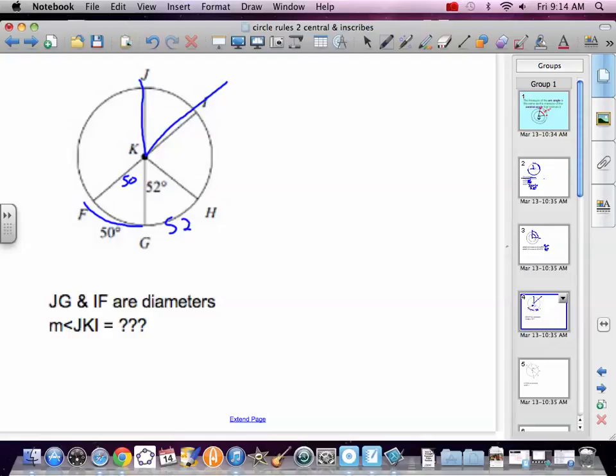And we know that all the way from F around to I is 180. And we've got 50 and 50, we have 102 of it. So that means this is 78. And we're trying to find just that part.